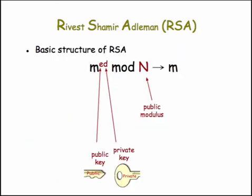The idea for the public and private key is that there are two halves of this exponent used in the expression M raised to an exponent mod N. The trick is, mathematically, to get this exponent in such a way that it's very hard to break it into half if you don't know some secrets.